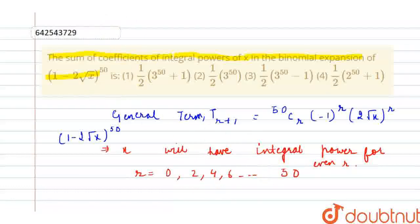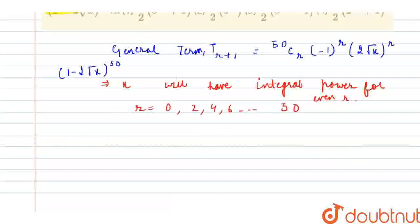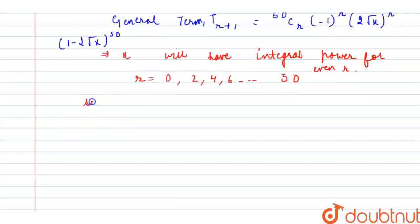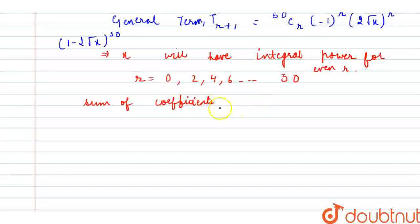Now, what would be the sum of coefficients? So, I am writing down sum of coefficients, that is equal to 50C0·2^0 + 50C2